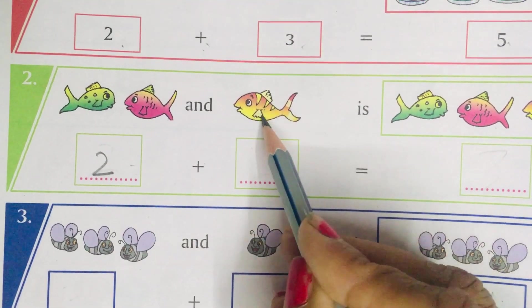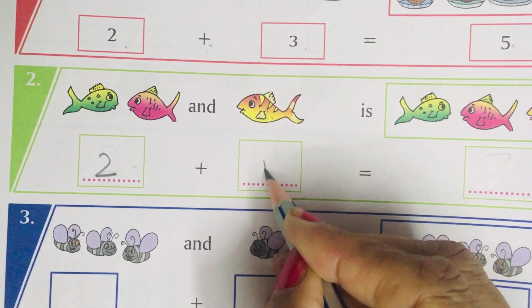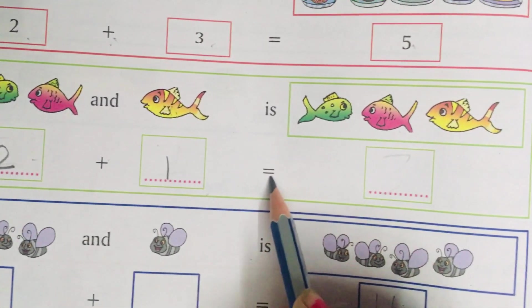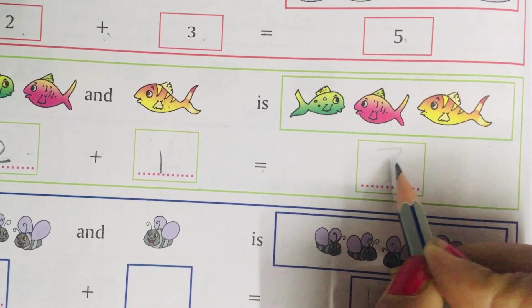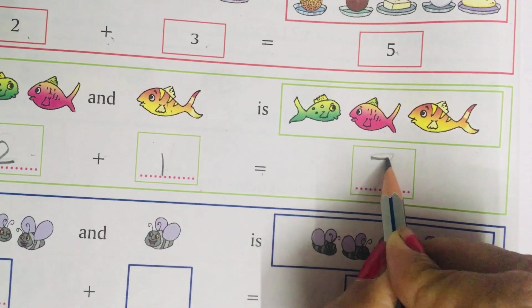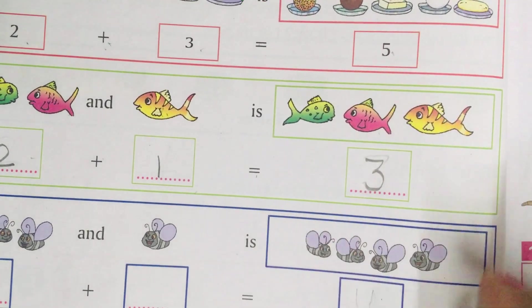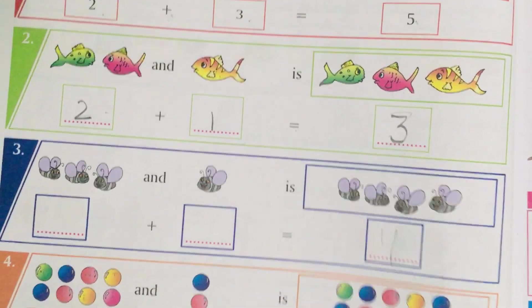Then, plus, how many fish? 1. Now, equals to, count these fish as 1, 2, 3. So, what we will do? We will write 3 over here. So, you have to do these sums like this in this book.